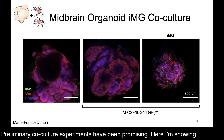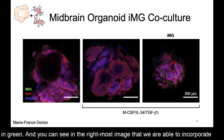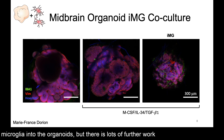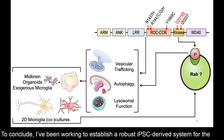Preliminary co-culture experiments have been promising. Here I'm showing whole mount stainings of midbrain organoids with IBA1, which is a microglial marker, shown in green. You can see in the rightmost image that we were able to incorporate microglia into the organoids, but there is still lots of further work and optimization to be done here.